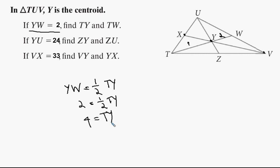And then we want to find TW. Well, there's a couple ways to do that. We know that YW is one-third of the whole thing, or we can just take the 2 and the 4 and add them together, and either way we get TW equals 6. So there's the answer to that first line.